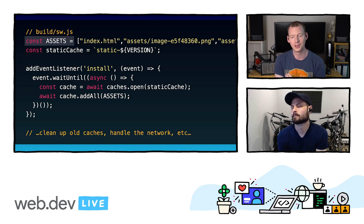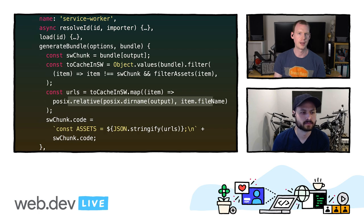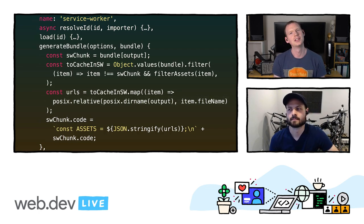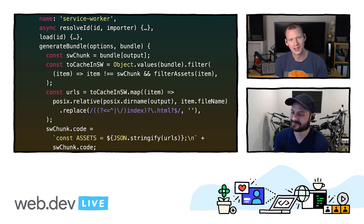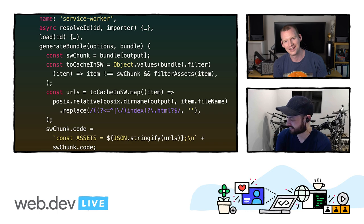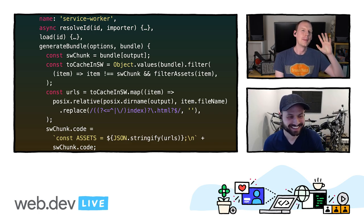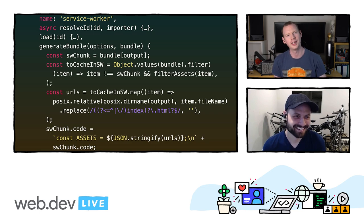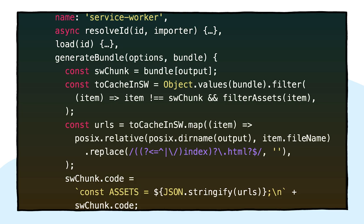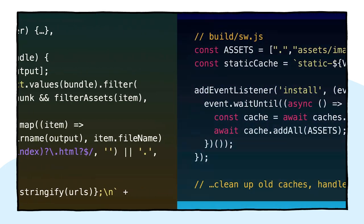We've created a problem though — this is something that catches a lot of people out when they're doing service workers. It's easy to think the service worker is caching files, but it's not — it's caching URLs. And we don't want `.html` in our URLs. We don't want `index.html` in our URLs. So we need to fix that. Regular expressions — of course it's regex. I'm not going to go through how this works, but trust me, this is removing the `.html` and removing `index.html` as well. This could land us with an empty string, which would resolve to the service worker script itself, so in that case we just output a dot. And that solved the problem — index.html there is replaced with a dot.